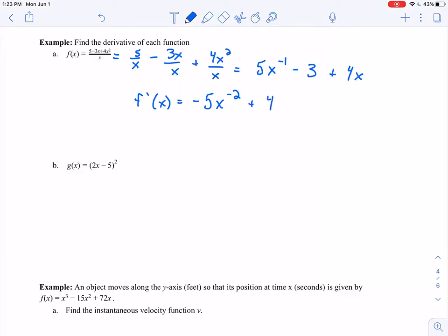So we can leave our answer like this, or if you prefer a positive exponent, negative 5 over x squared plus 4. Here is my derivative. Either one of these is fine.